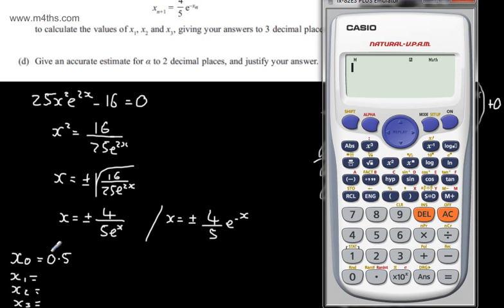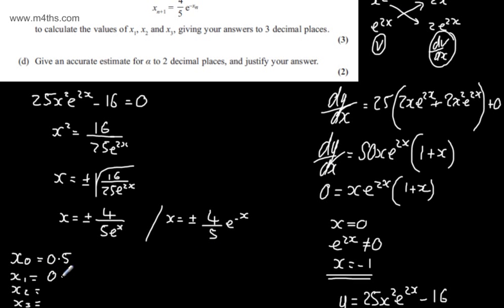On the calculator, I've got x sub 0 is 0.5. Let me put that in as my answer. I now have 4 over 5, then e to my answer. What we're going to end up with is the next one. So this is x sub 1: 4, 8, 5, double 2, 4. So 4, 8, 5, double 2, 4.